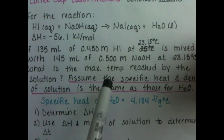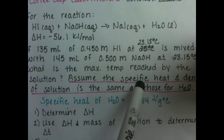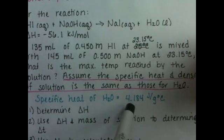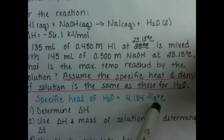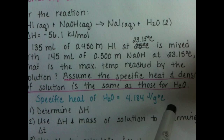To solve this problem, we're going to assume that the solution that we make has the same specific heat as water. The specific heat of water is 4.184 J/g°C, and it also has the same density as water, 1 g/mL.